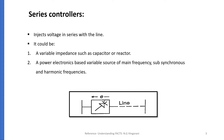Series Controllers are used to inject voltage in series with the line. The series controller could be a variable impedance such as capacitor, reactor, etc., or a power electronic based variable source of main frequency, subsynchronous frequency, or harmonic frequency. Voltage injection in series with the line is represented by a variable impedance multiplied by the current flow through it. Series controller supplies or consumes variable reactive power when the supplied voltage is in phase quadrature with the line current. Any other phase relationship involves handling of real power as well.